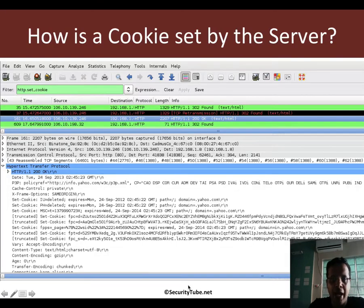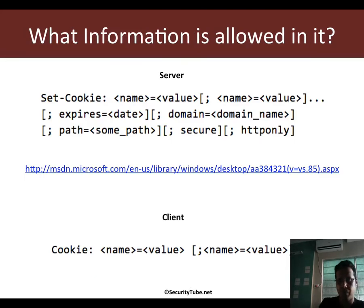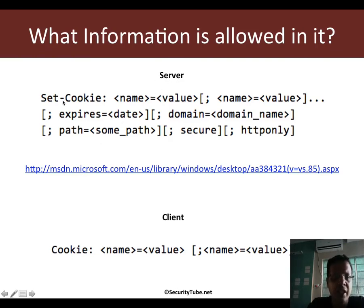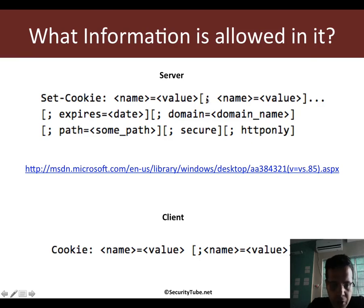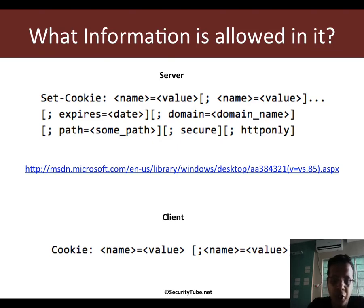Let's try and understand the individual attributes of the cookie. The server sent a Set-Cookie header field and the client sent a Cookie field. The server tells the client: set the cookie — here is the name=value pair, and you can have multiple of them separated by semicolons. When the client wants to send back the cookie, it only sends back the name-value pairs. It does not send back the other attributes — the other attributes are really for the client to decide whether or not to send the cookie, to expire it, or whether it's supposed to be sent over HTTPS.